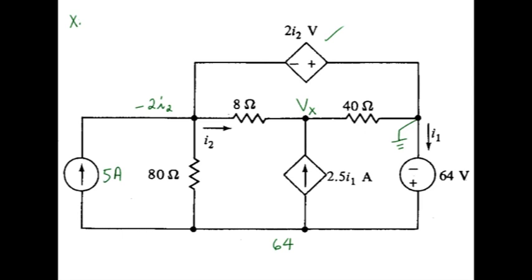So at node x, we have the following. Current heading westward is vx minus voltage on the other side, which is minus 2i2, divided by 8. And again, when you do that, you do not write down anything to do with i2 at that point. Simply use the assigned node voltages and any other node voltages that might exist.